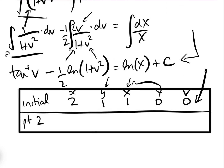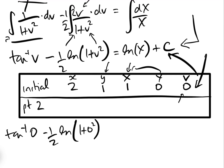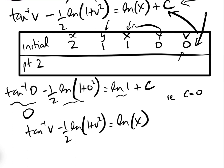So our equation simplifies to tan⁻¹(v) − ½ log(1 + v²) = log X. We don't need to substitute back the v's or big X at this stage. We're almost at the answer.